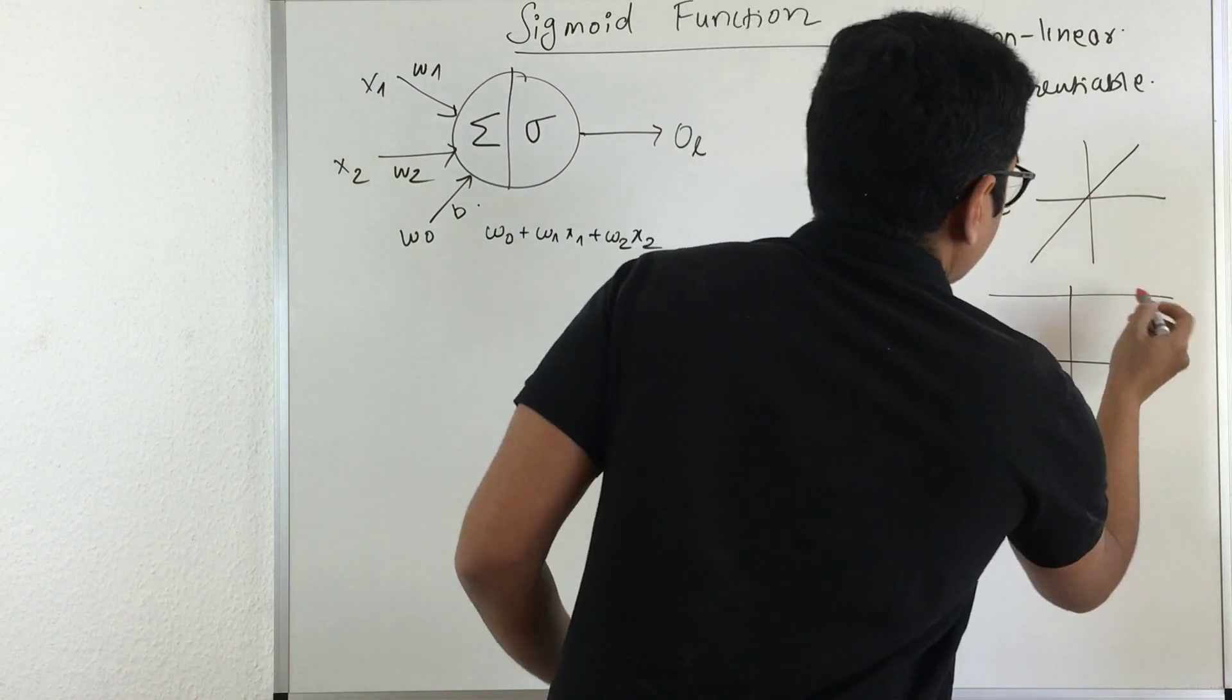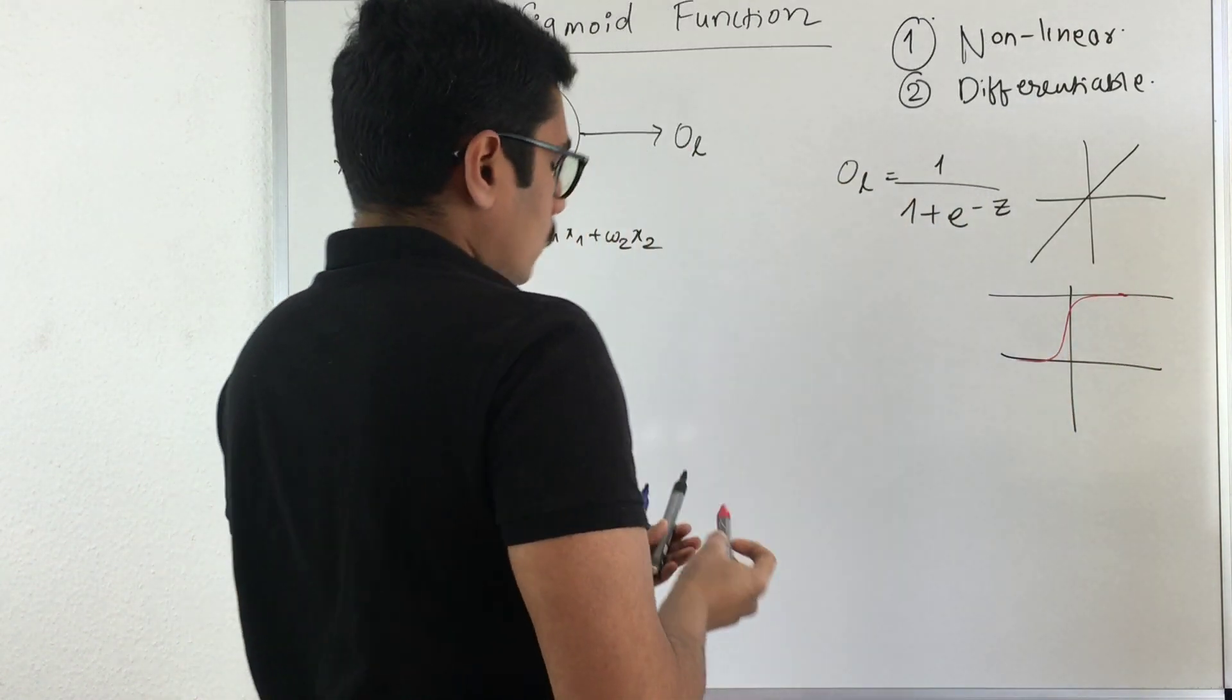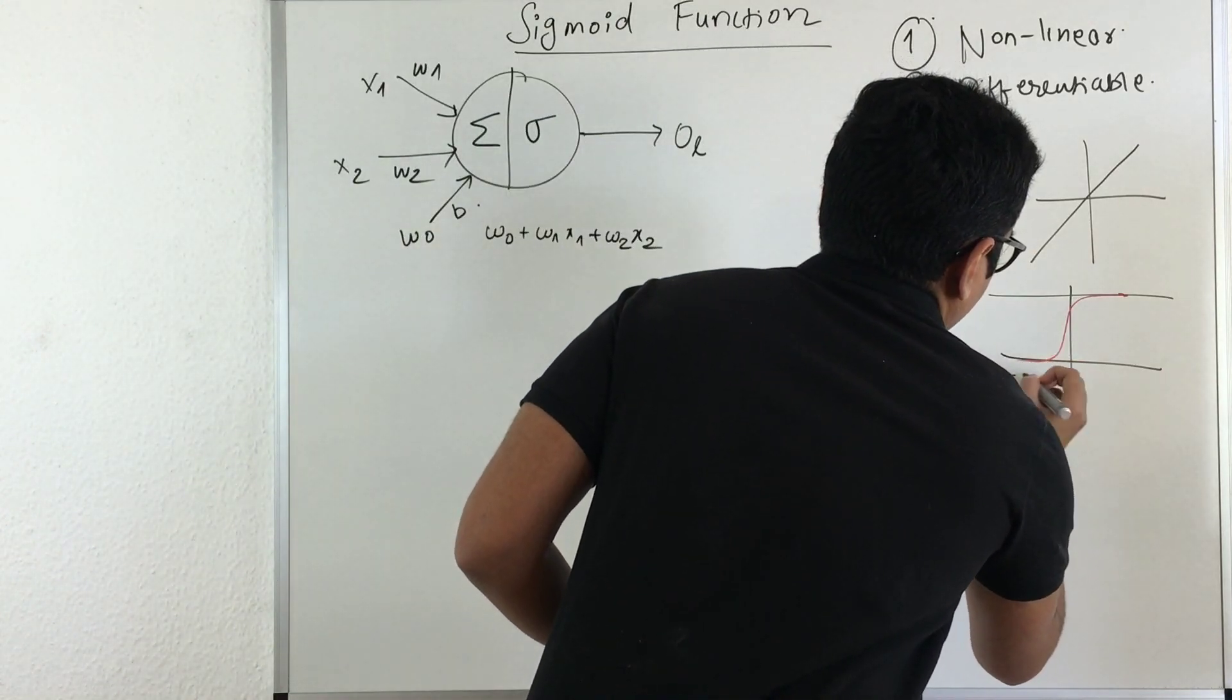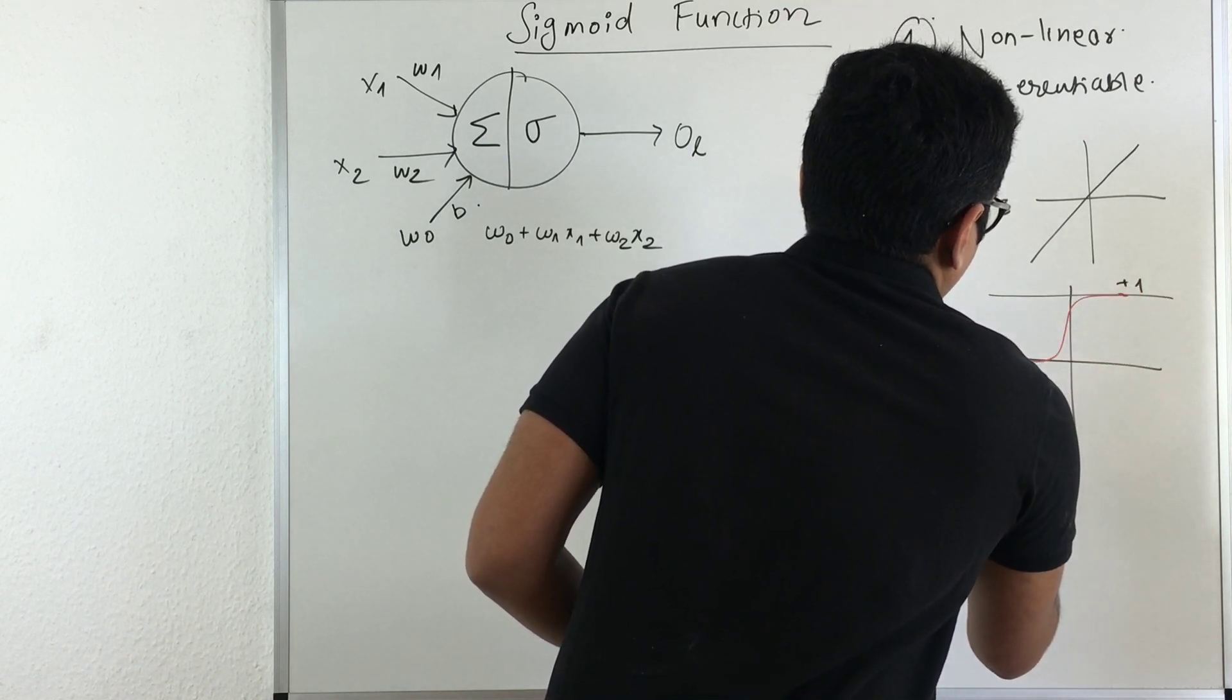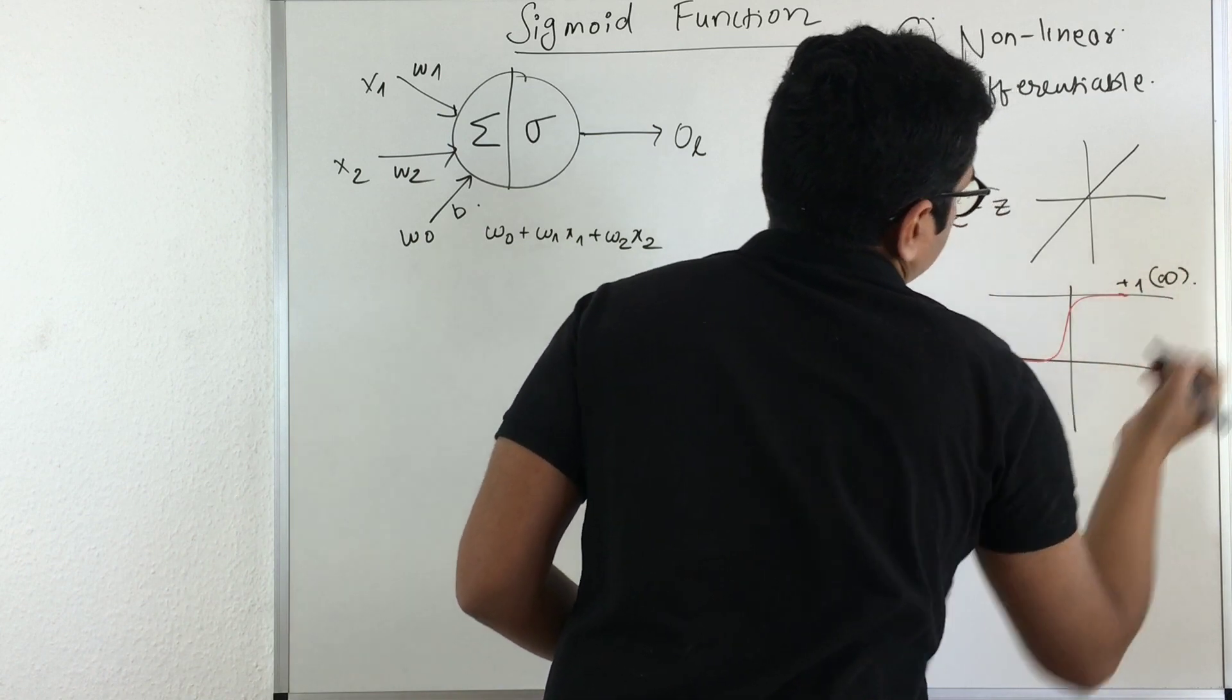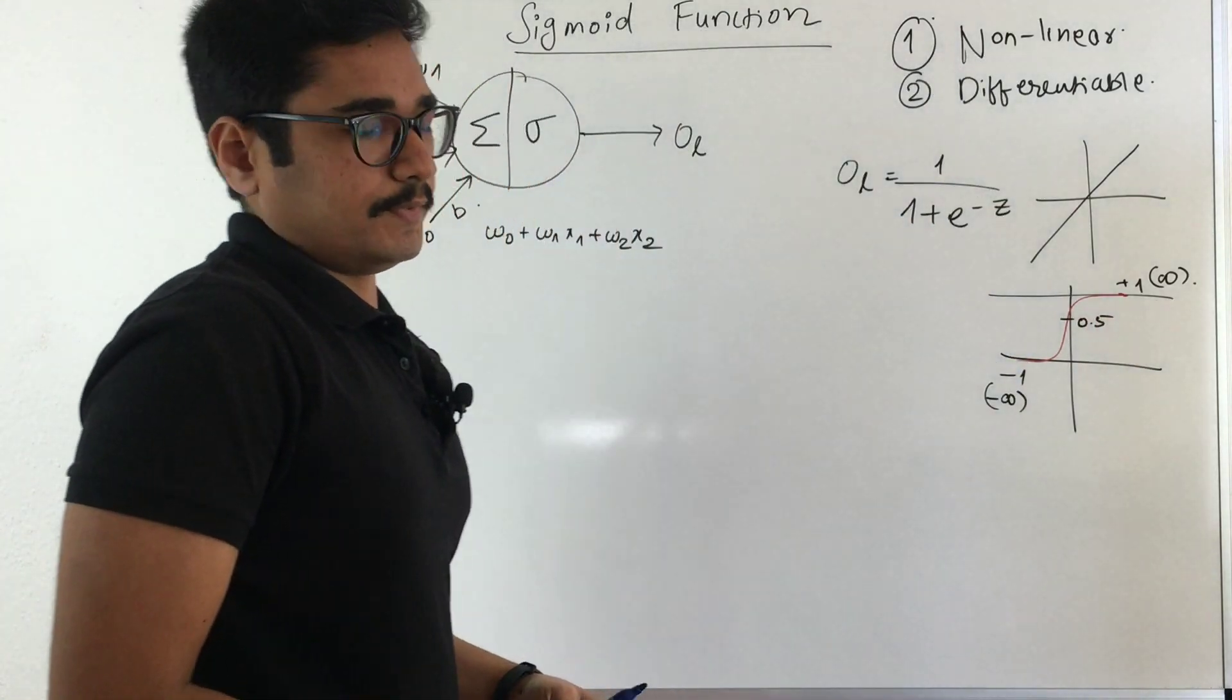Sigmoid has the property that it will squeeze your input signal or value range to this portion. It has -1 and +1. At minus infinity it achieves -1, and at positive infinity it reaches this value, and then you have some threshold, say 0.5.